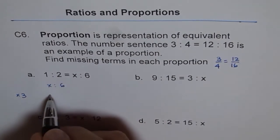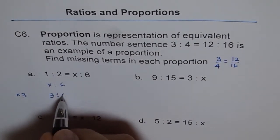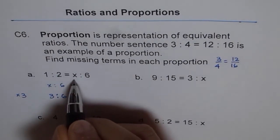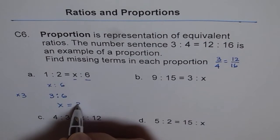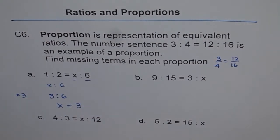So that is how we get our answer. If I multiply both by 3, I get 3 is to 6. Now we can compare these two. So x should be equals to 3. So we get x is equals to 3.